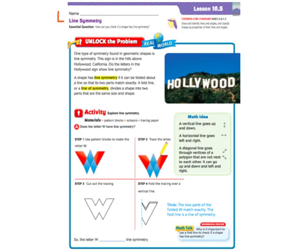Lesson 10.5 is all about line symmetry, so we're checking shapes to see if it has line symmetry. Here on Unlock the Problem, it says one type of symmetry found in geometric shapes is line symmetry. This sign is in the hills above Hollywood, California. They're talking about the picture right there. Do the letters in the Hollywood sign show line symmetry? Well, first we need to know what line symmetry is.